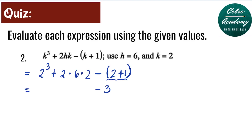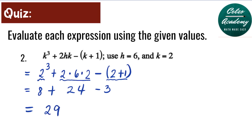Now we simplify the exponent: 2 to the 3rd power means multiplying 2 by itself 3 times. So 2 times 2 is 4, and 4 times 2 is 8. Then we multiply 2 times 6 times 2, which is 24. Simplifying from left to right: 8 plus 24 is 32, and 32 minus 3 is 29. So the answer for this expression is 29.